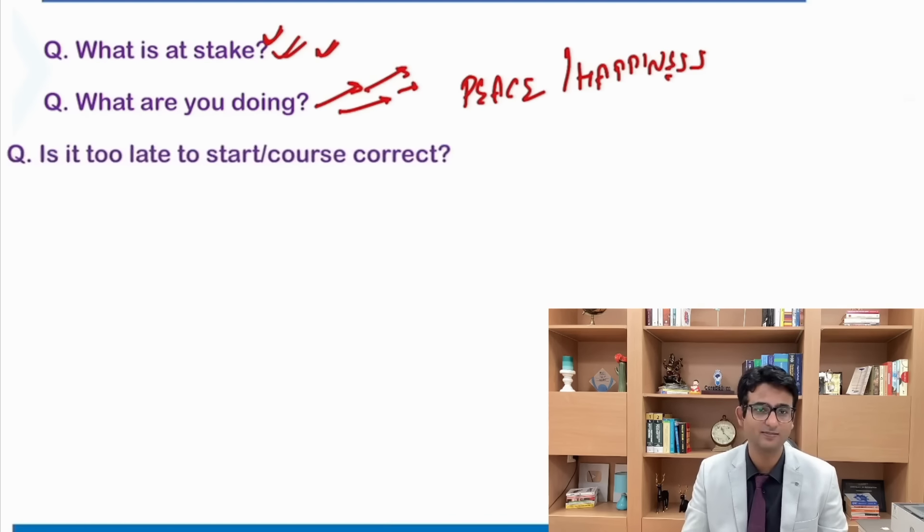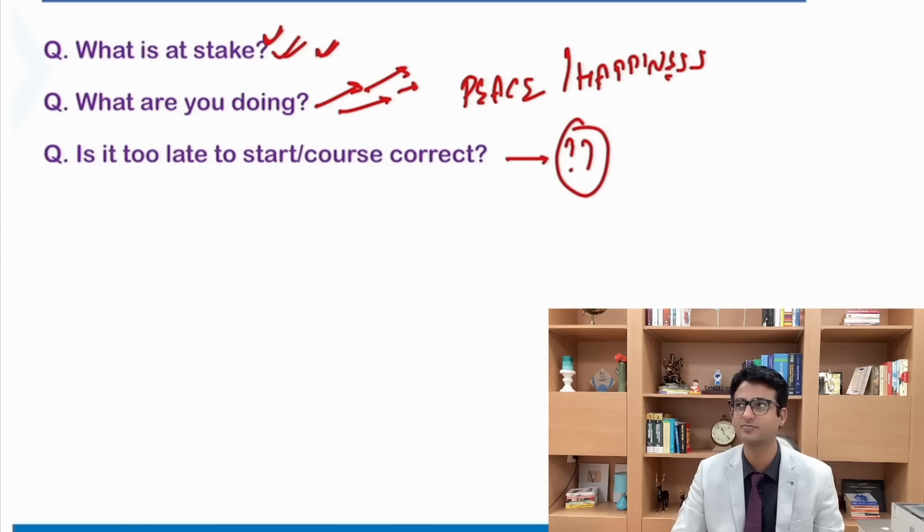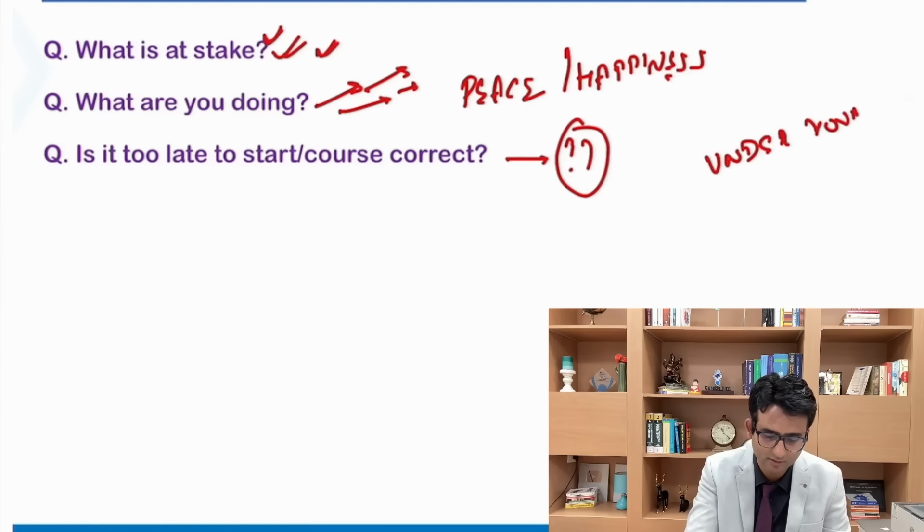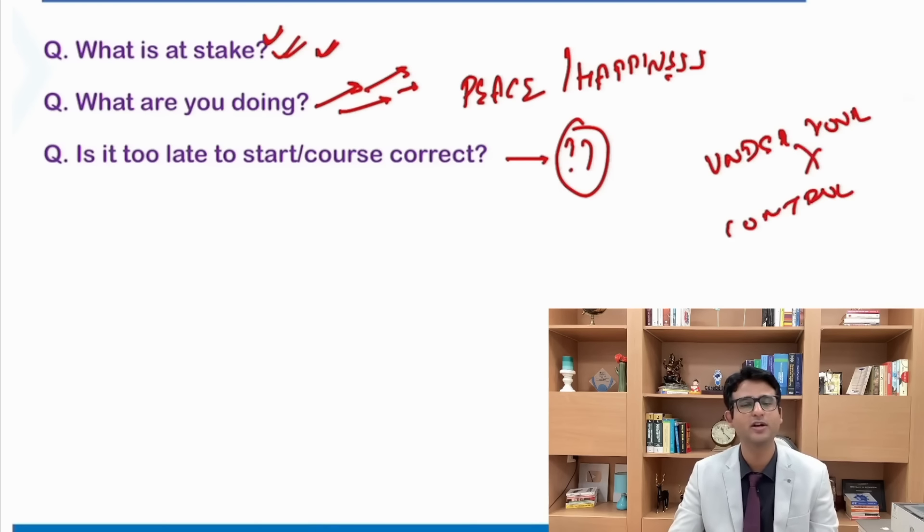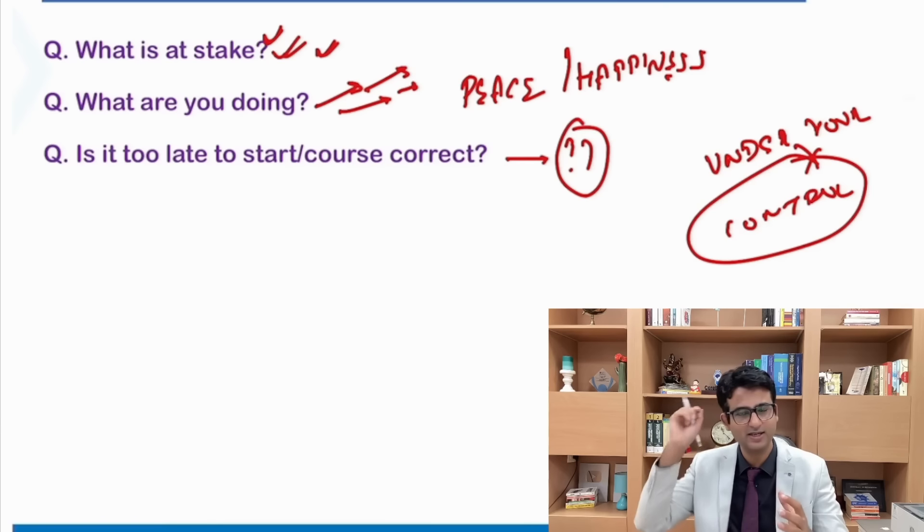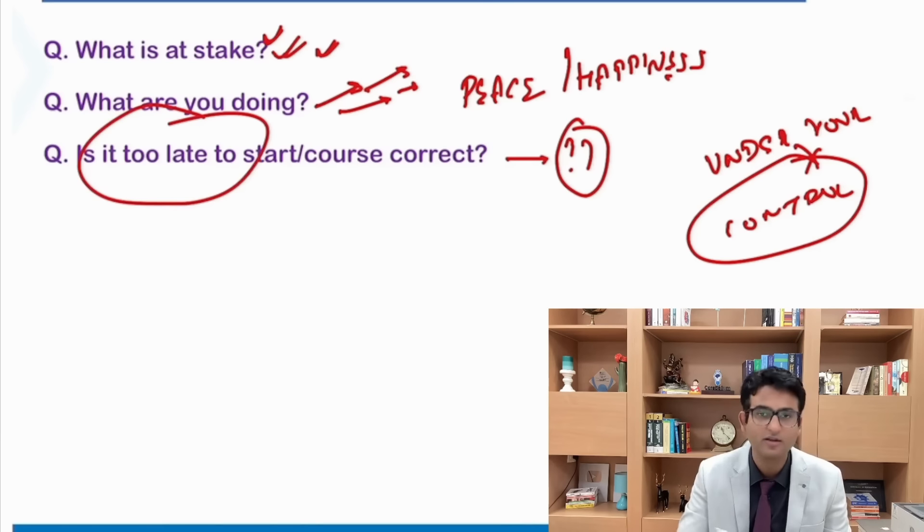When I say things like this, the immediate thought that comes in the mind is, you are right, but I have already wasted so much time. What now? My dear students, not only for the entrance examination but for life in general, you have to make this a rule. Your brain should be focusing only on things that are under your control. What happened yesterday is no longer under your control, but what happens today and tomorrow is under your control. More than 100 days are left. That's a significant amount of time.